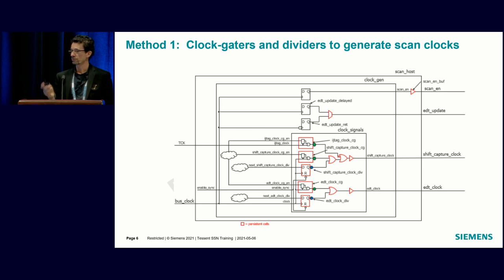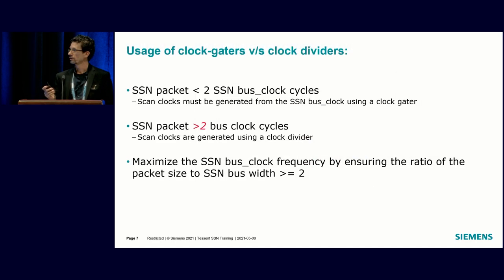We're going to use the clock gator if your packet size is less than two clock cycles, which I think is pretty unusual. But if you have a design where packet size is less than two clock cycles, you don't need multiple clocks to get the packet fully loaded, then we'll just use a clock gator. We'll use a clock divider if it's more than two clock cycles.